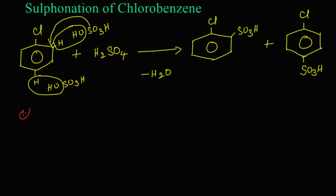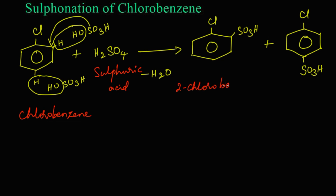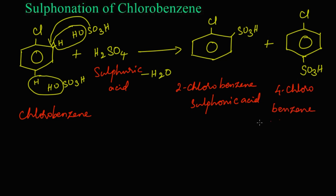Let's write the names for these structures. Chlorobenzene reacts with concentrated sulfuric acid and we get a mixture of products: the ortho isomer and the para isomer. The name of the ortho compound is 2-chlorobenzene sulfonic acid, and the para compound is 4-chlorobenzene sulfonic acid.